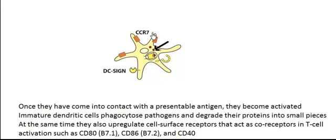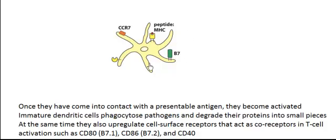These two receptors — B7.1 and B7.2 — are needed in addition to MHC class II protein to bind to CD28 on the surface of T cells to activate them. The red element here represents the MHC class II proteins; a pathogenic protein will bind to the MHC class II protein and be presented to the surface of the cell. The activated dendritic cell takes small pieces of pathogen and attaches them to MHC class II proteins — the yellow represents MHC class II and the tiny red one represents the antigen.